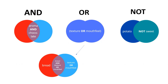OR is kind of the opposite — you use it to combine two terms that have something in common. They may be direct synonyms or just serve the same purpose for your search. For example, texture and mouthfeel aren't exactly the same, but if you're thinking about how something feels in your mouth, you might be happy to find results where the researcher used either word.